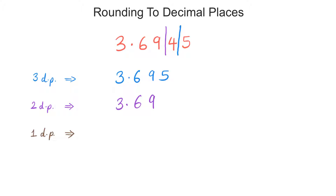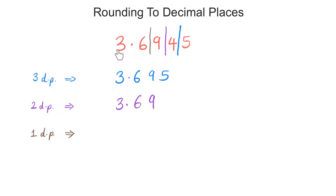We have rounded it down. And then the last one, to one decimal place. So, from the decimal point, one decimal place is here, so we put the line over here. What comes after the line? 9, so I need to round up. Imagine this as 36 as a whole number. What comes after 36? It's 37, so this becomes 3.7.